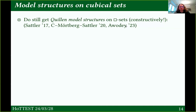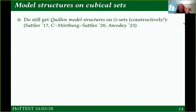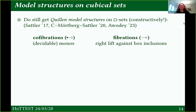We can do this even constructively, which is in itself remarkable. Christian Sattler was the one who first did this for cubical sets, working from the type theoretic models and using properties of the type theoretic models to build the model structure. Steve Awodey did this for Cartesian cubical sets. Christian did it for cubical sets with connections and Andrew Swan — sorry, I always get the S wrong — also contributed. We also did something about that.